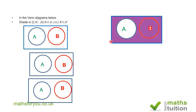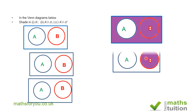For A prime intersection B: A prime is everything outside A. I now find what A prime has in common with B. Since B is common to A prime, we shade just the part of B that lies outside A — that region is A prime intersection B.